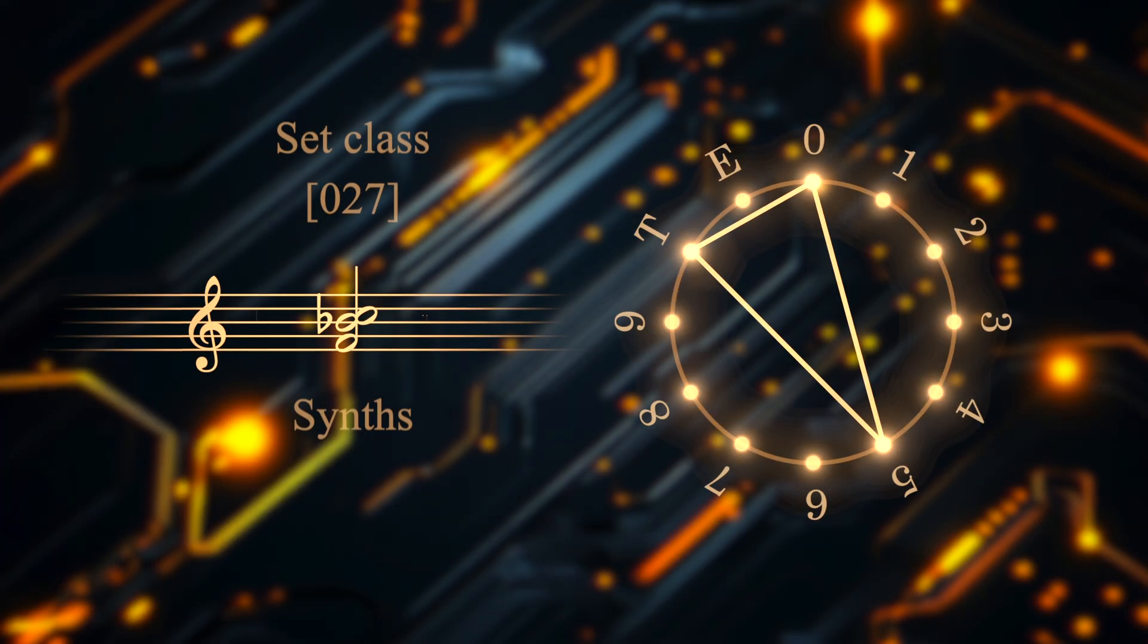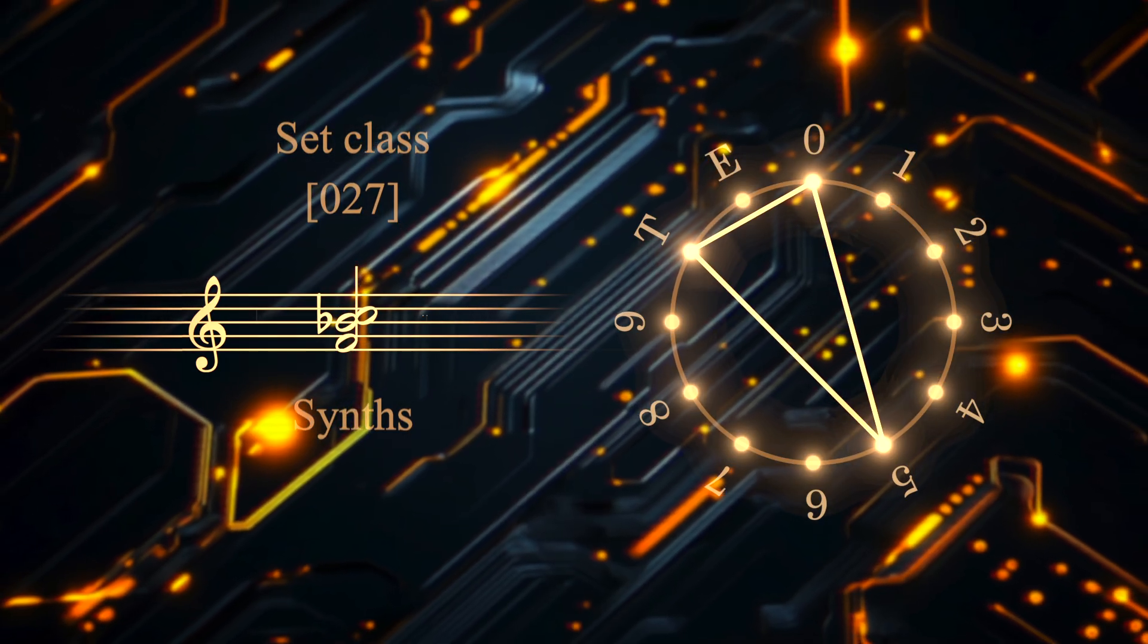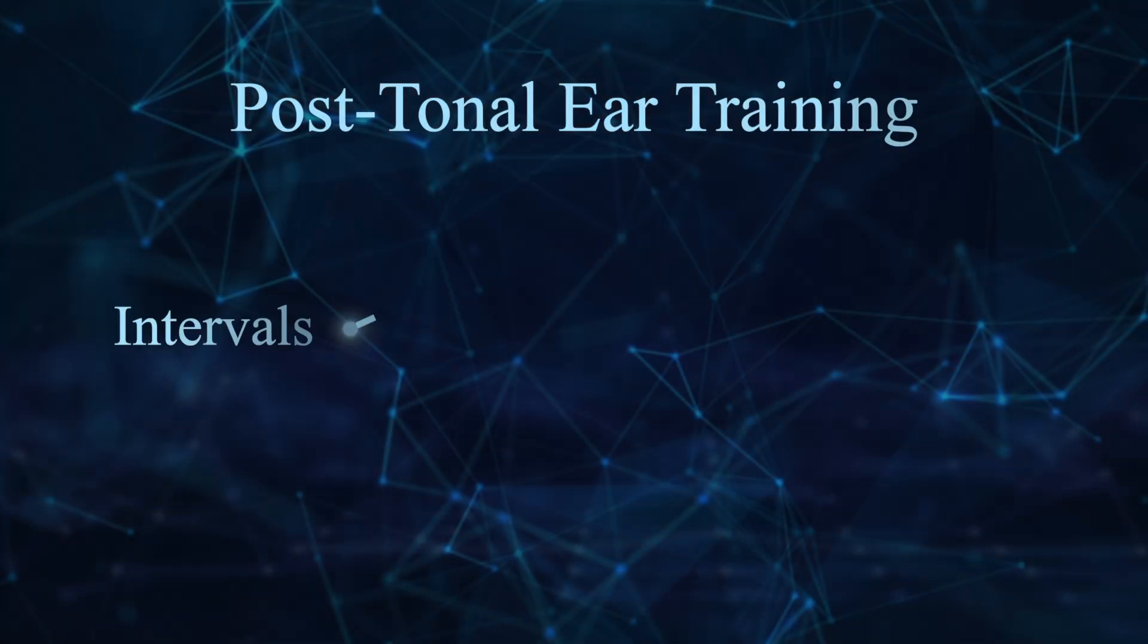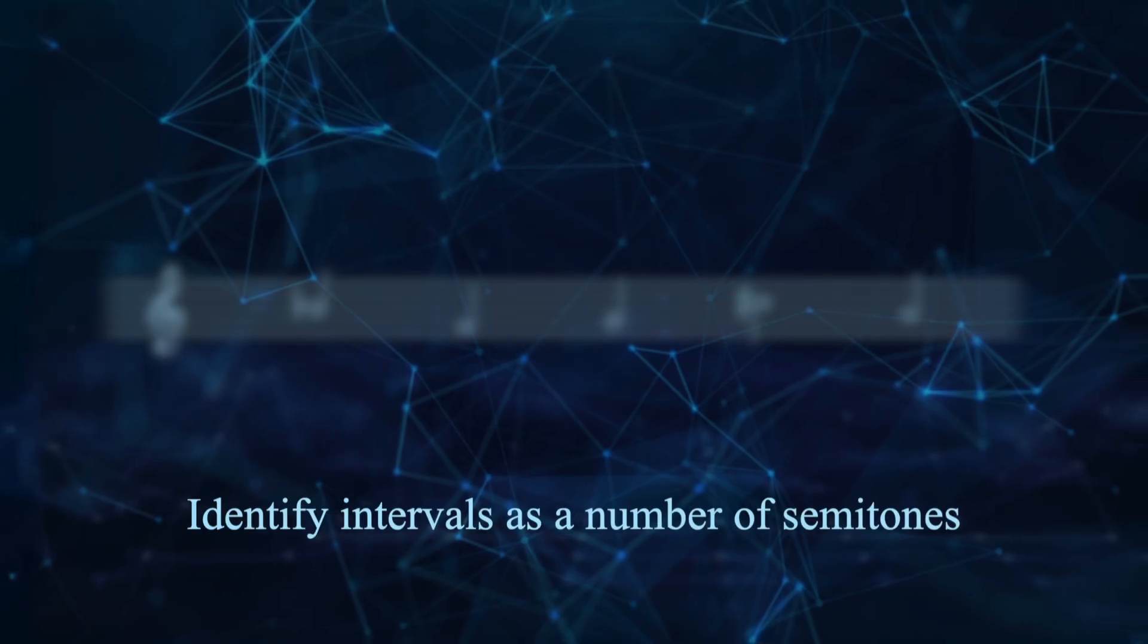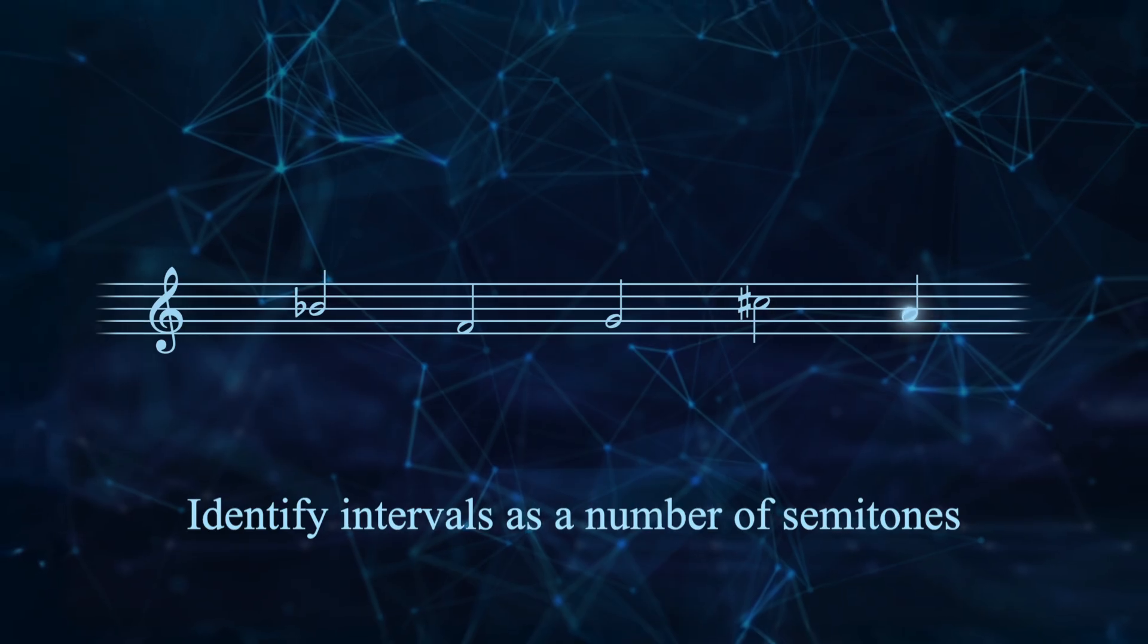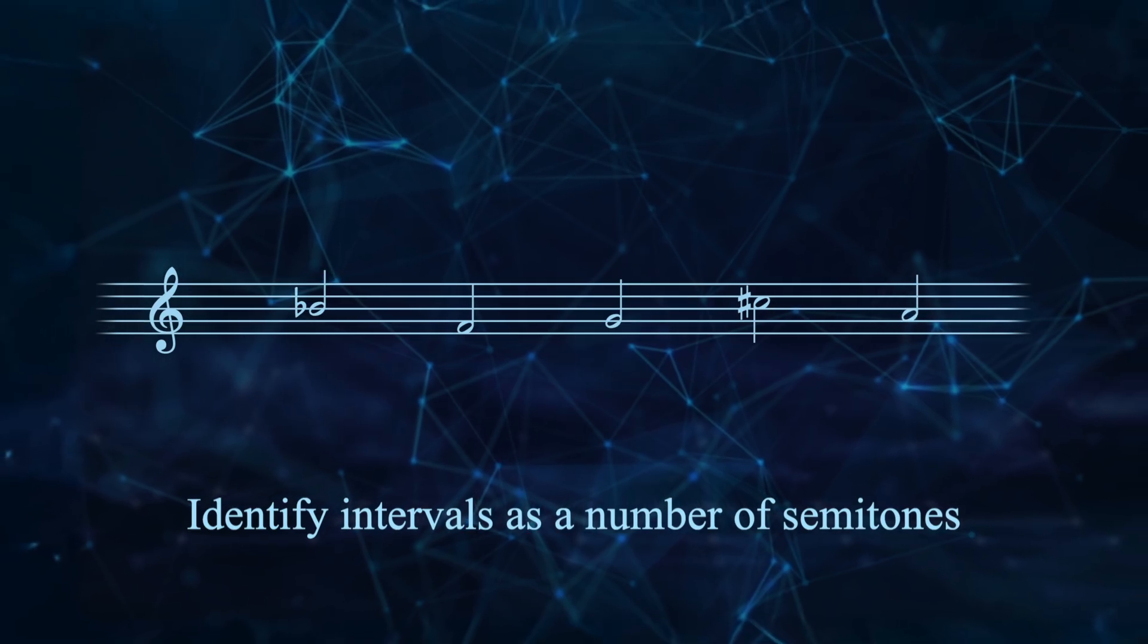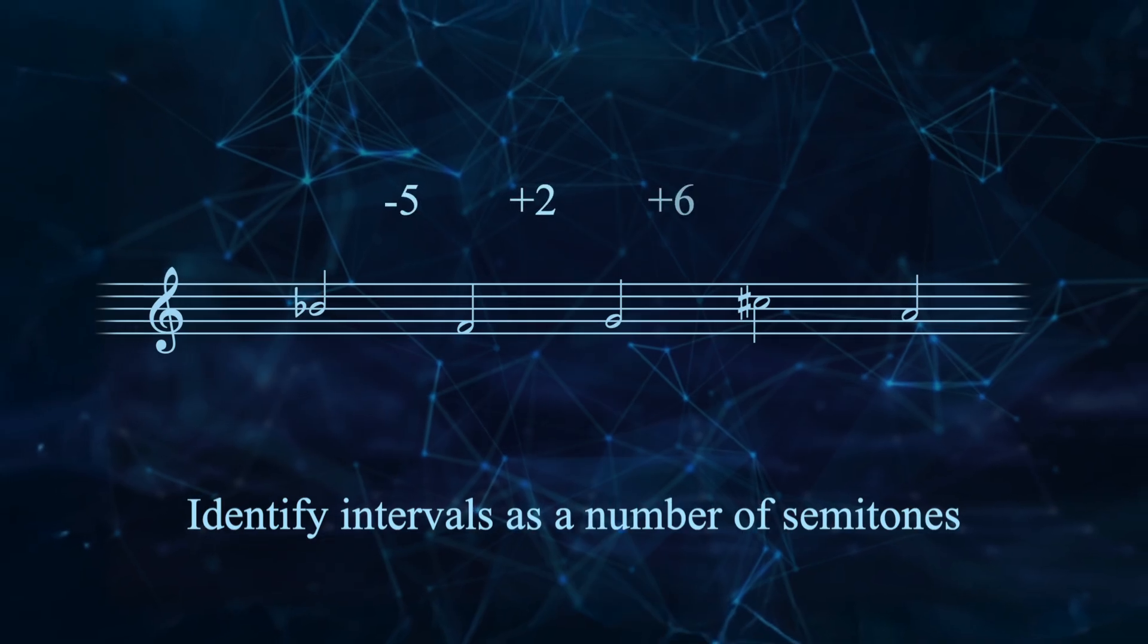Or like this. Before identifying trichords, you need to be able to identify intervals as a number of semitones, so a sequence that sounds like this is minus 5 plus 2 plus 6 minus 4.